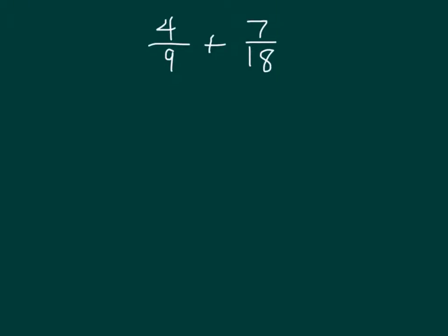Here I have the problem, 4 ninths plus 7 eighteenths. Now, if I took the same strategy as I've been taking previously and multiplied by the other denominator, I'd have 18 times 9. And as you see here, that would be 162. And then so I'd be working with really big numbers. Now, what I can do, though, is I recognize that this is 18 and this is 9. And I know that 9 times 2 is 18.